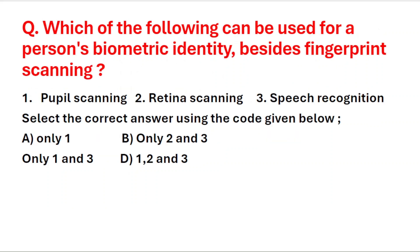Next question: which of the following can be used for a person's biometric identity besides fingerprint scanning? First: pupil scanning, second: retina scanning, third: speech recognition. The correct answer is option D — all three: pupil scanning, retina scanning, and speech recognition can be used for a person's biometric identity.